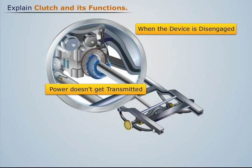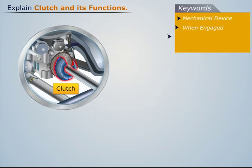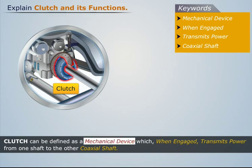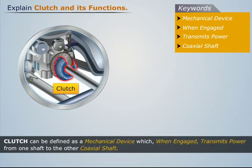Such a device is known as a clutch. Thus, a clutch can be defined as a mechanical device which, when engaged, transmits power from one shaft to the other coaxial shaft. The clutch of an automobile is mainly responsible for the following functions.